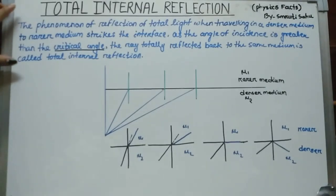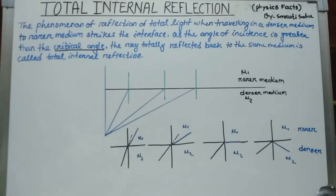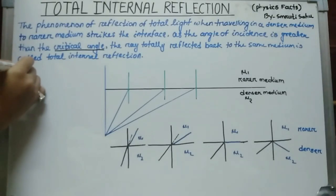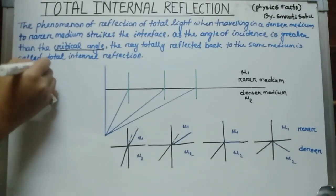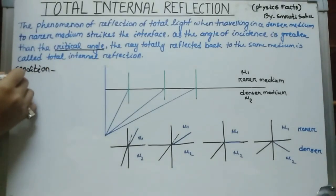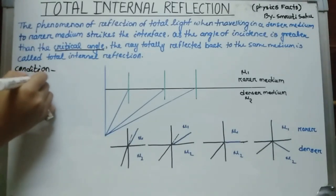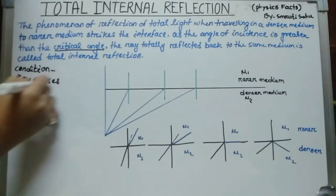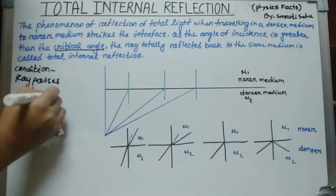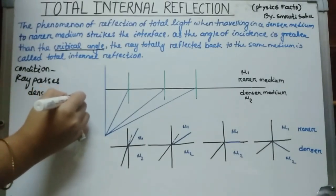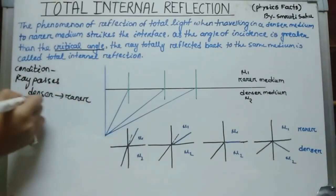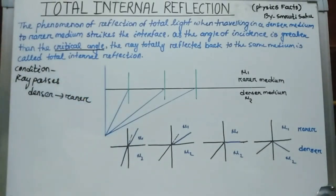This is the definition we will study in detail. The first condition in total internal reflection is that the ray must pass from a denser to a rarer medium — always from denser to rarer medium.